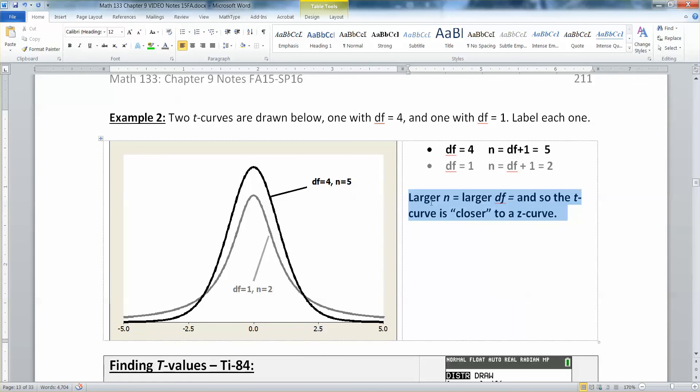I just typed that up real quickly to show you where the degrees of freedom came from. It came from adding one to our degrees of freedom. That means the larger your degrees of freedom, the larger your N, they go hand in hand. And that would make your T curve closer to a Z curve.